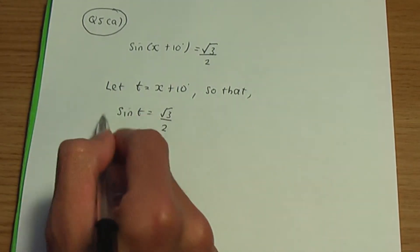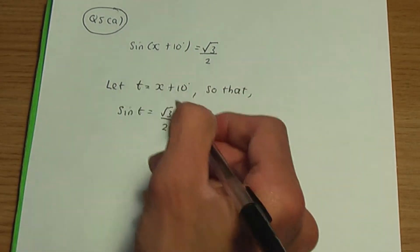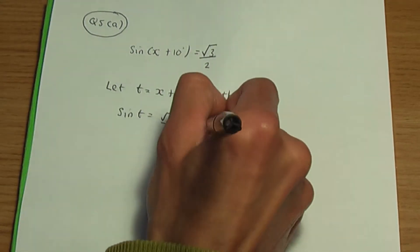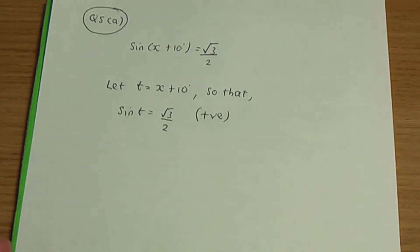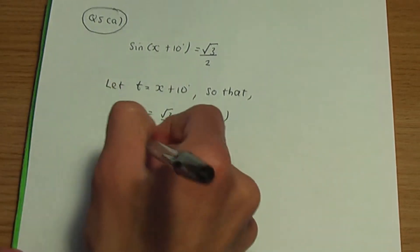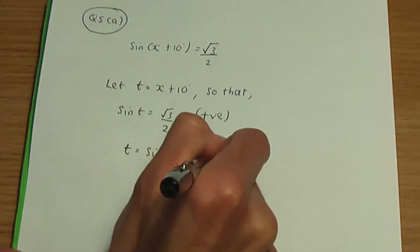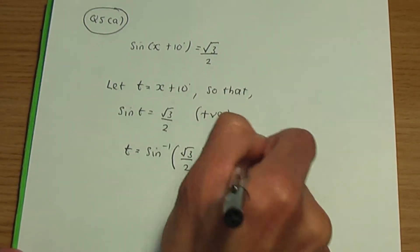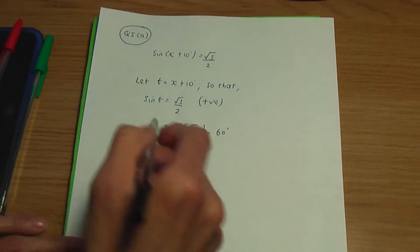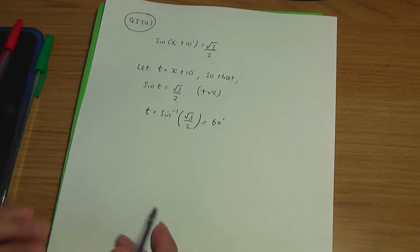Looking at this trigonometric equation that we need to solve for t, I'm going to use the CAST diagram. We have a positive sign because we have +√3/2 on the right-hand side, so let's make a note that sin is positive. To work out the angle, we need the inverse sin of √3/2. That is a standard result — that gives you 60°. So we need to plot 60° on our CAST diagram where sin is positive.